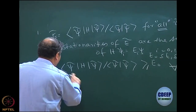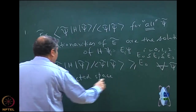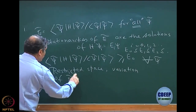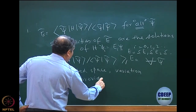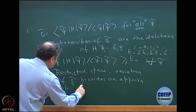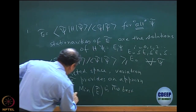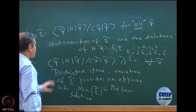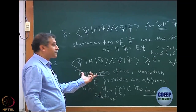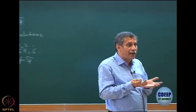So even in a restricted space, I do not have to scan all of Hilbert space. The variation within a restricted subspace provides an approximate solution to E_0. The minimum of E tilde is the best solution under that variation. However, this best solution can keep changing because your space may keep changing.